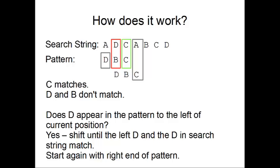If the D in the string was indeed part of the pattern, we will be able to match it this time, provided the other characters before that also match of course. If there is more than one D left in the pattern, we pick the one closest to the mismatch.